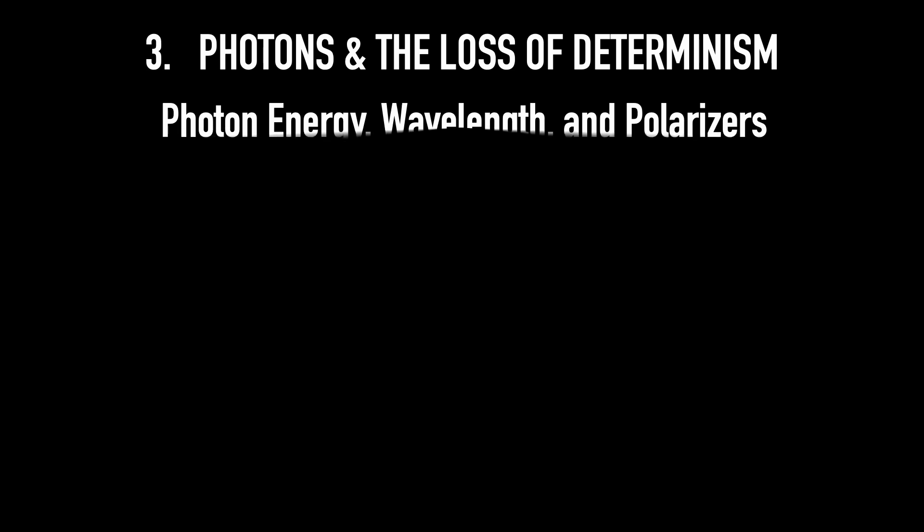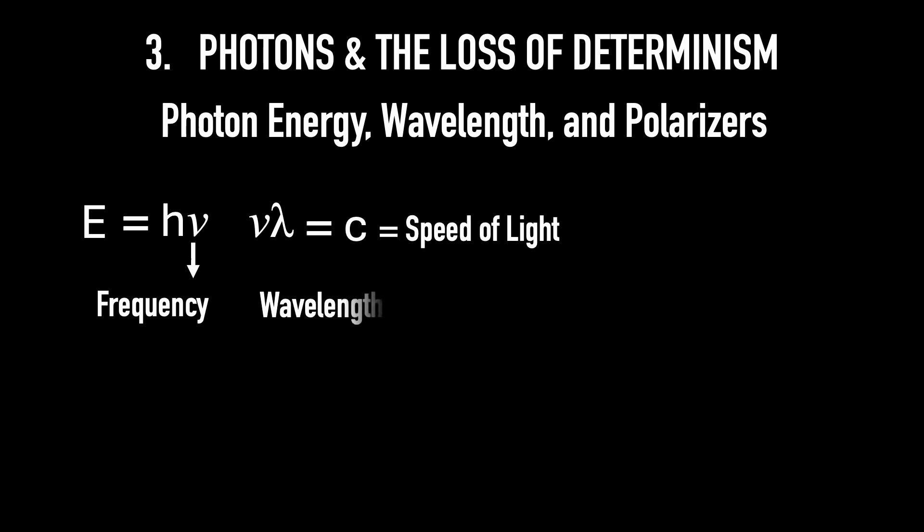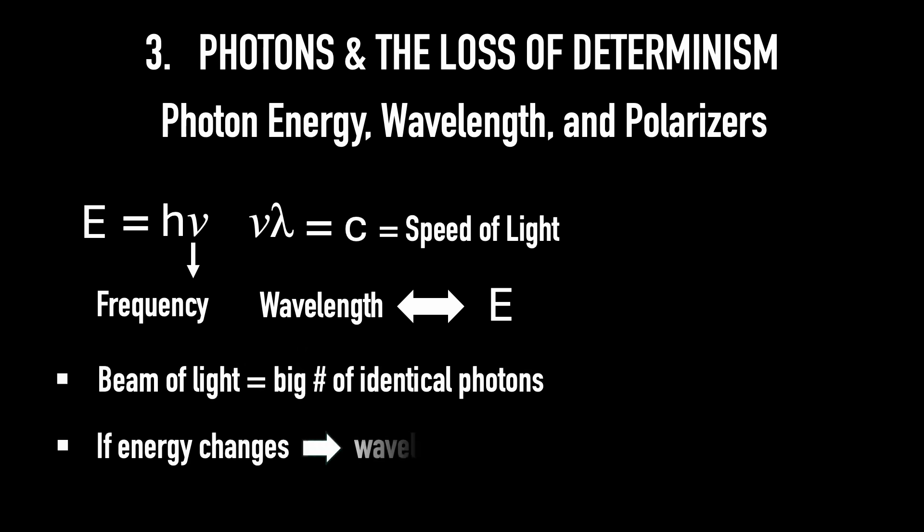Photon energy, wavelength, and polarizers. Einstein realized that, for a photon, the energy E is given by h times nu, where nu is the frequency of the light. And frequency times wavelength equals the speed of light. So the wavelength of the light is determined by the energy of each photon. If you have a beam of light, which is billions of identical photons, and if the energy of each photon changes, the wavelength of the beam changes accordingly.